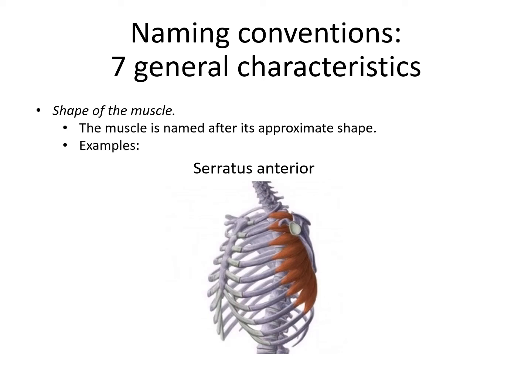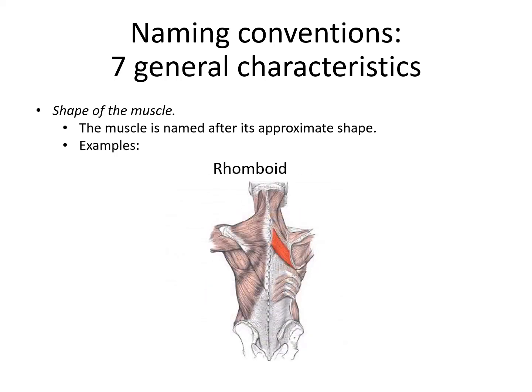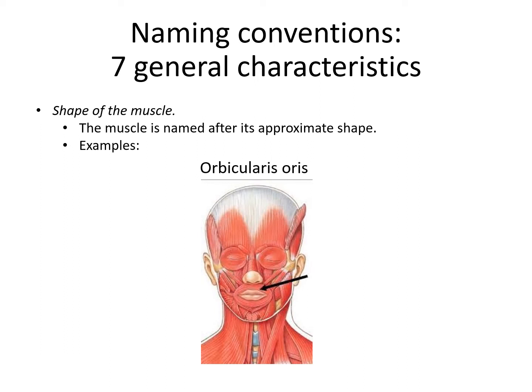The serratus anterior muscle — if you look at the anterior portion of the muscle, it looks serrated like a knife blade or a saw blade on the anterior side, so serratus anterior is a great descriptive name. The rhomboid major is named because a rhomboid is a four-sided figure in geometry, and you can see this muscle is definitely a four-sided figure. Finally, the orbicularis oris goes in an orbit around the mouth — the name indicates it's in a circle around the mouth.